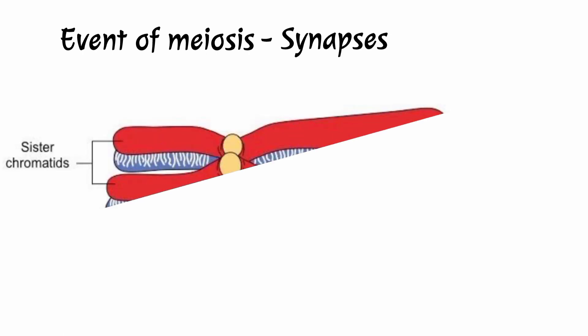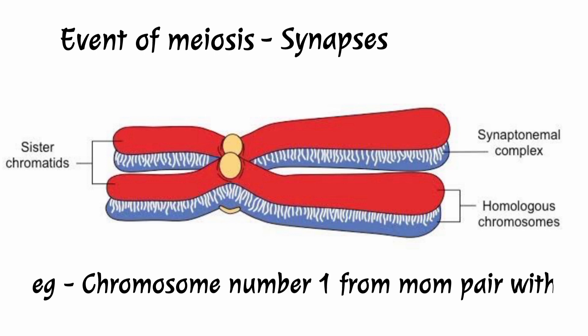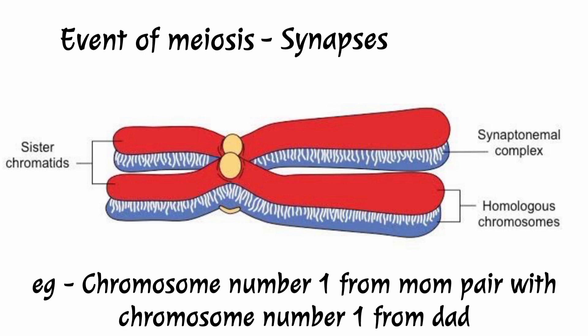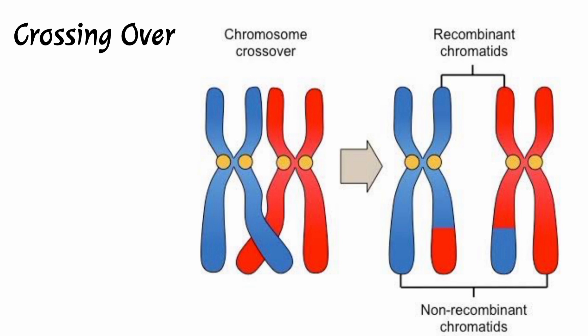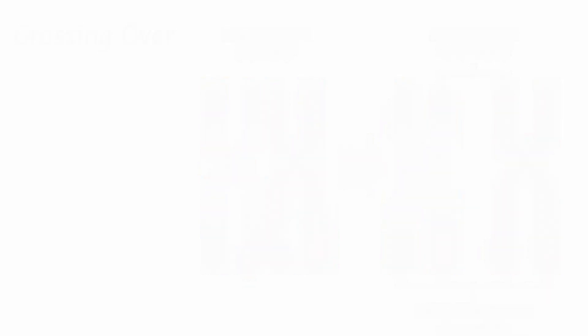During meiosis I, the first event is synapsis — the pairing of homologous chromosomes, where chromosome number one from the paternal side pairs with chromosome number one from the maternal side. Next is crossing over, during which a piece of genetic material is exchanged between paired chromosomes, leading to recombination. Then separation occurs, where homologous chromosomes separate from each other.